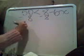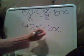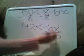And we get 42 is less than negative 6x. Now, the next thing to do is divide by negative 6x.